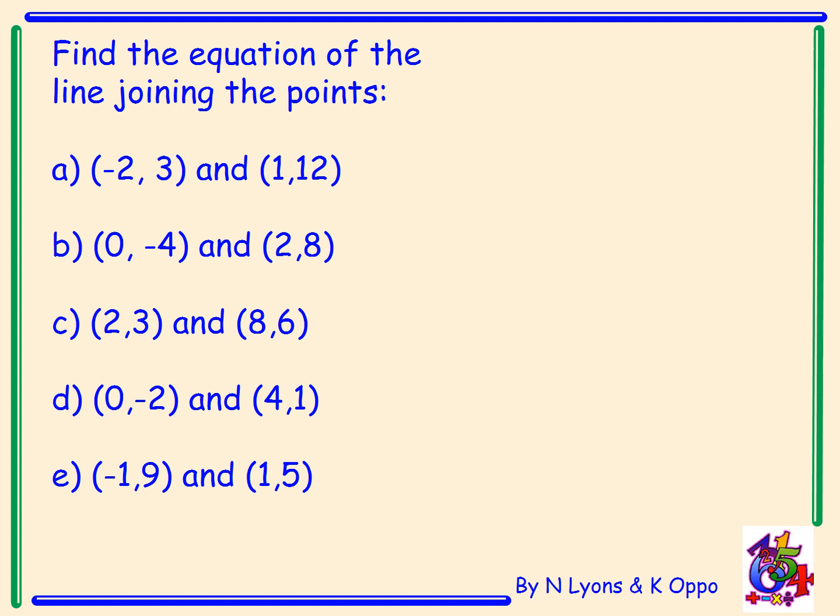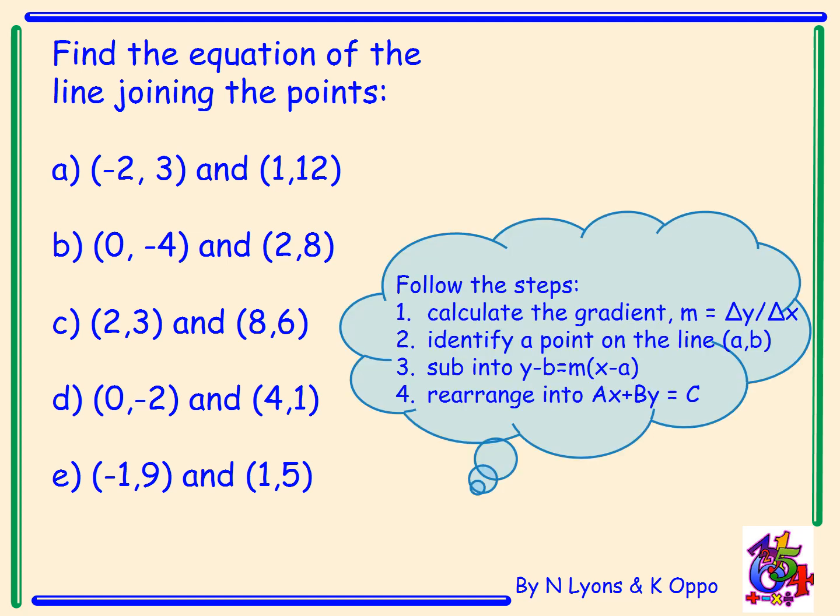Okay, so here's some more examples for you to try on your own now. We're going to find the equation of the line joining the points, and we have five examples for you to try on your own. To get yourself started and to give you some extra help, follow my steps. One: calculate the gradient m, the change in y over change in x. Two: identify a point on the line a, b. It doesn't matter. Three: substitute into y minus b equals m(x minus a). And then finally, rearrange your equation into the form ax plus by equals c.